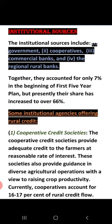The institutional agencies offering rural credit include: Number one — Cooperative Credit Societies. Their purpose is to provide adequate credit to farmers at a reasonable rate of interest. At present, approximately 16 to 17% of the rural credit flow is because of cooperative credit societies.